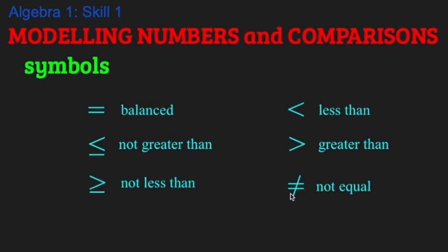Same kind of idea here. The number on the left can be bigger, it can be equal, it cannot be less than the number on the right. And if we put a slash through an equal sign, we're saying two things are not equal. We don't say which is greater or which is less. They're just not equal to each other.